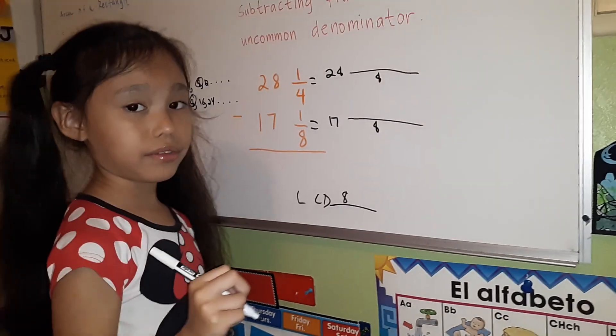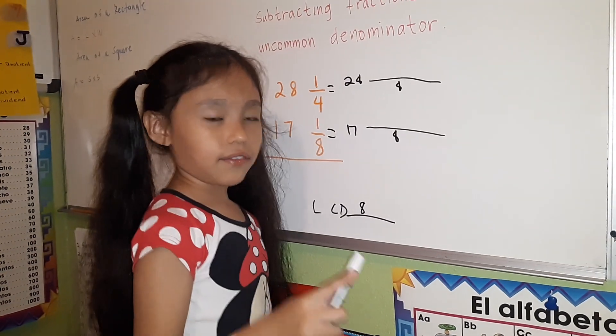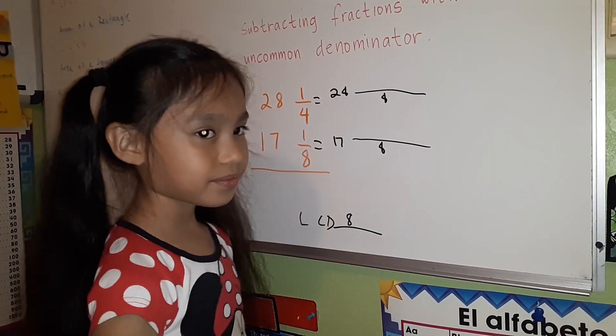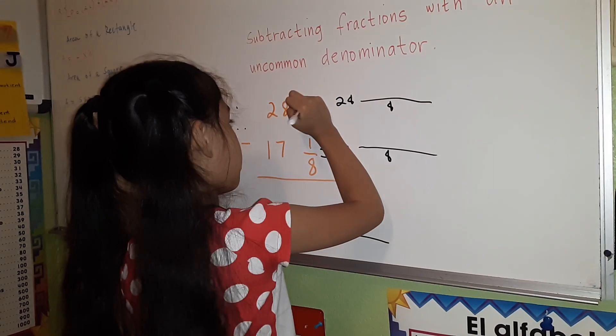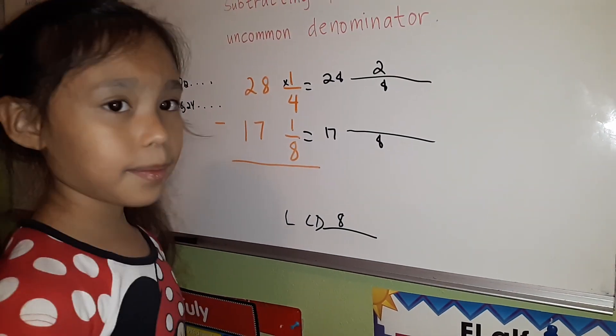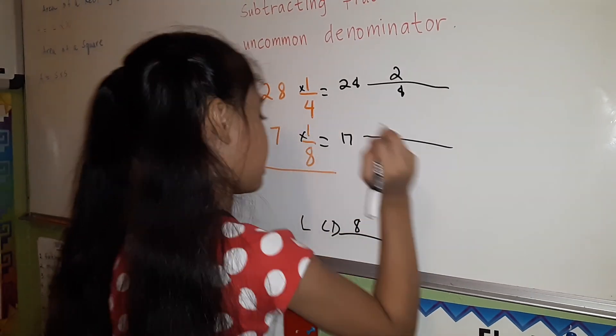Now that our denominators are the same, we're going to find the equivalent fractions. To find the equivalent fractions, we divide the denominator and multiply it with the numerator. 8 divided by 4 equals 2, 2 times 1 equals 2. The same thing with 8: 8 divided by 8 equals 1, 1 times 1 equals 1.